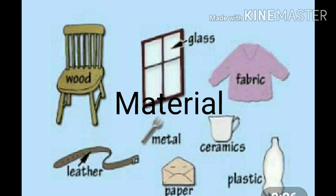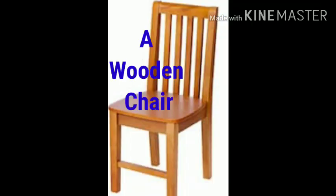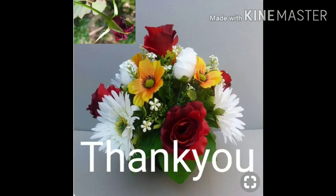Now moving on to material. The examples of material are a wooden chair. The chair is made up of wood. So wooden is an adjective. A plastic bucket. It is plastic. So plastic is an adjective.